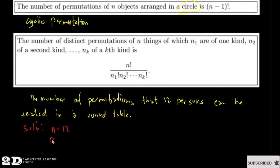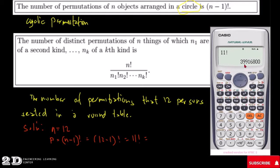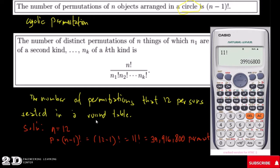For this problem, n is equal to 12 because you have 12 persons. So your permutation P is equal to (n-1)! which is equal to (12-1)! which is equal to 11!. Using your calculator, 11! equals 39,916,800 permutations.